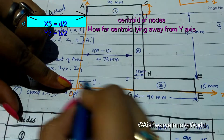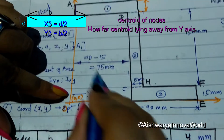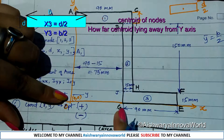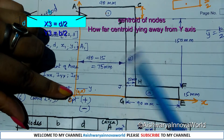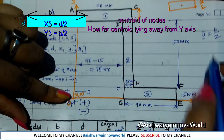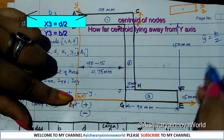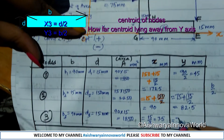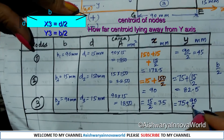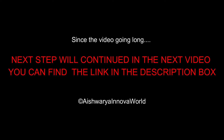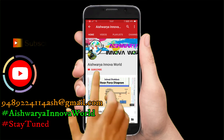For node 3 (bottom flange): it is also 75 mm away from the y-axis, with breadth 90 mm, so y3 = 75 + 90/2 = 75 + 45 = 120 mm. I hope this session was very useful. Please subscribe to my channel for more updates — I'll be bringing more ideas and tricks.